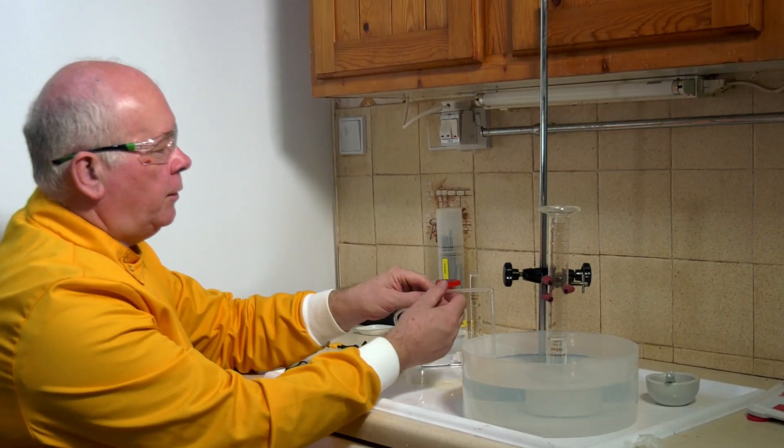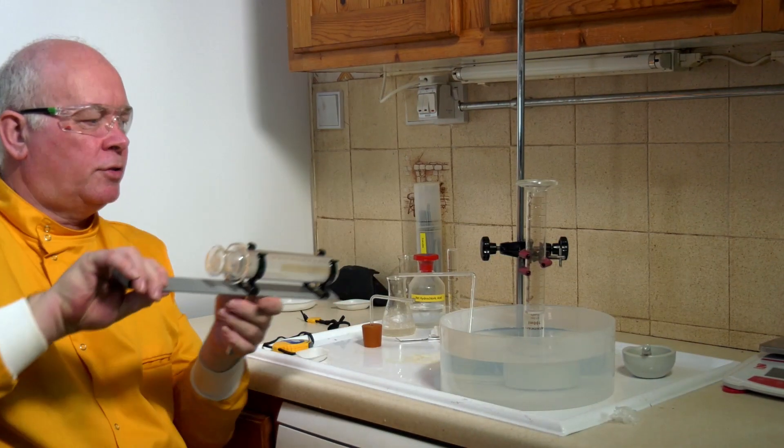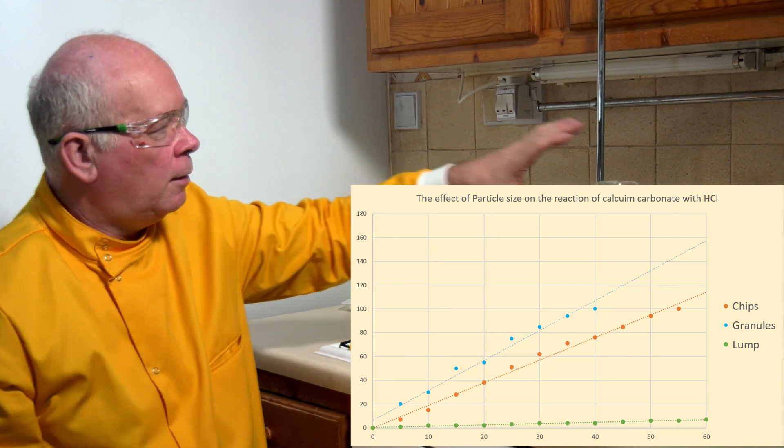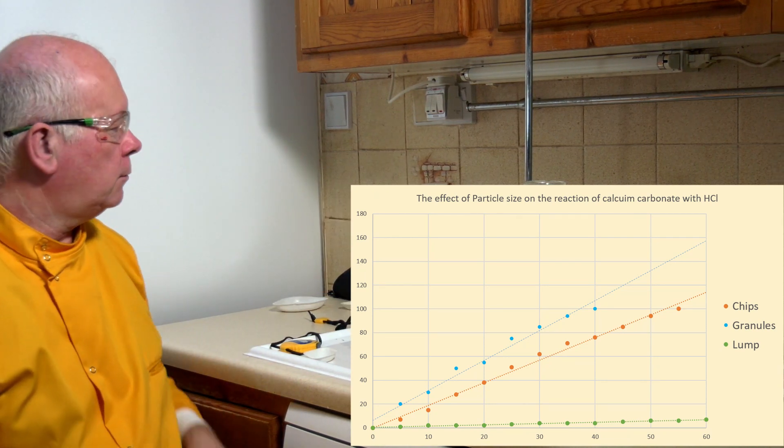So there are three ways of trying to do exactly the same experiment: collecting over water, using a gas syringe, or using a balance. Doesn't matter which one we use, the same effect is seen each time. With the particle size being very small, the rate of reaction runs very quickly. With a medium size particle it runs medium, and with a large particle it seems to run the slowest. So that's the effect of particle size on the rate of reaction and looking at three ways to do it.